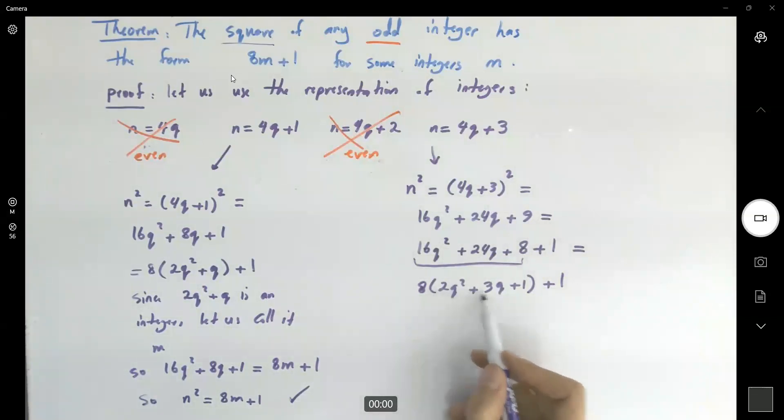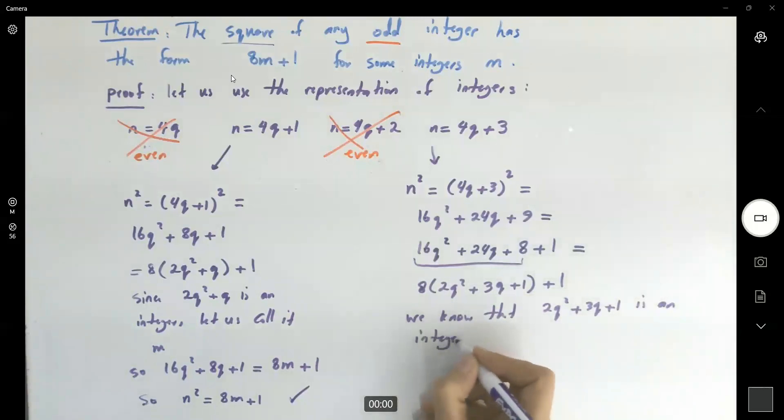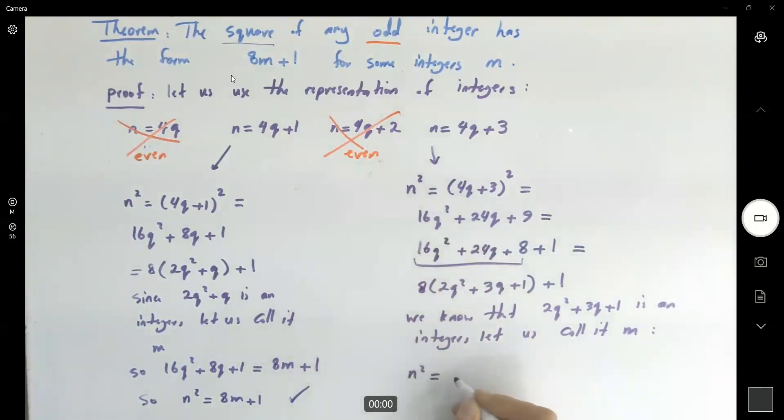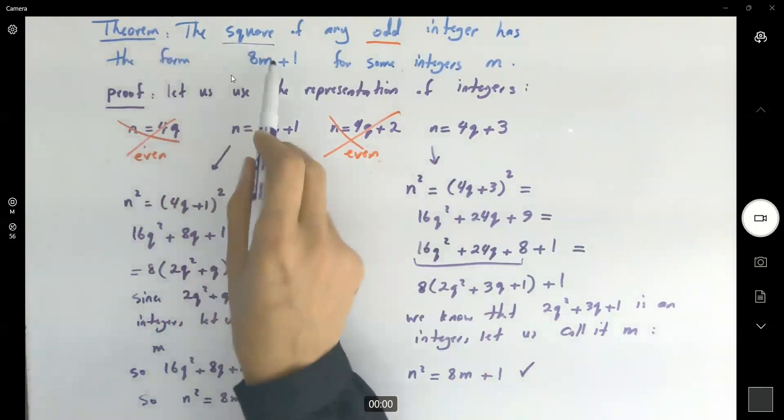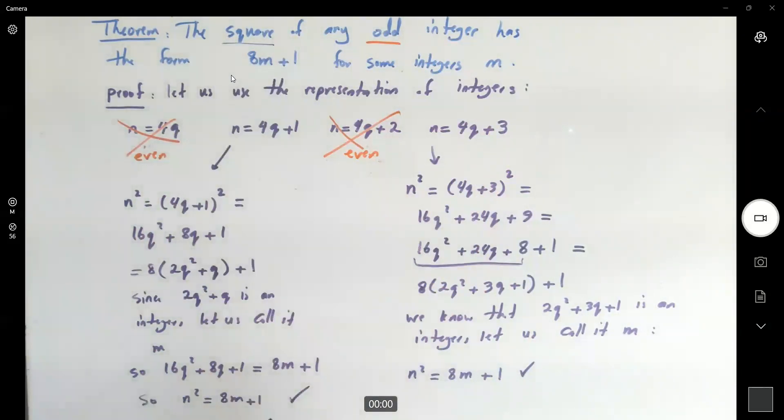But this guy is another integer. We know that 2q squared plus 3q plus 1 is an integer. Let us call it m. So what happened here? n squared is equal to 8m plus 1. We just proved this theorem. The square of any odd integer has the form 8m plus 1.